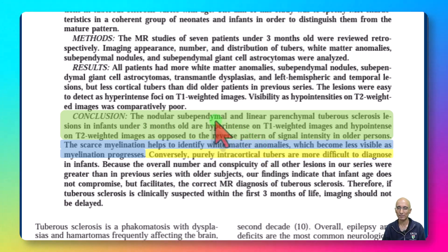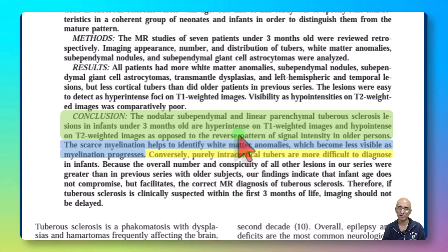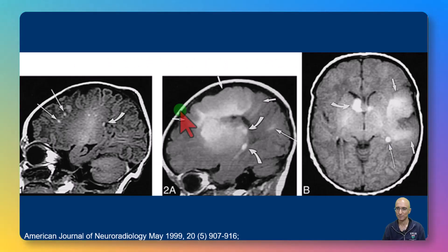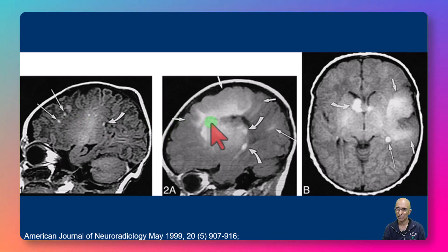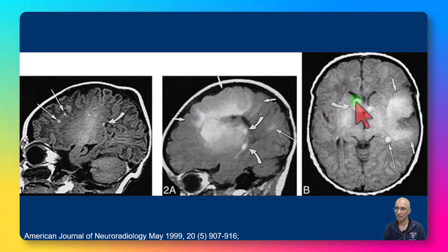MRI is a very good examination if there is clinical concern for tuberous sclerosis. Conversely, pure intracortical tubers may be difficult to identify, although we were able to see them in our patient. The representative images from the article demonstrate T1 hyperintense sub-ependymal nodules, radial bands, and cortical/sub-cortical tubers. In their research, they also found a sub-ependymal giant cell astrocytoma in one of their patients.